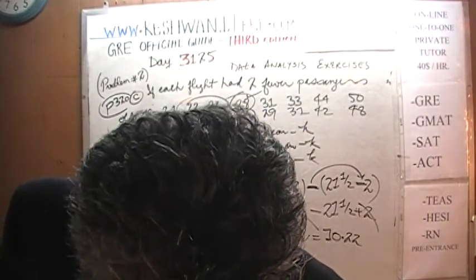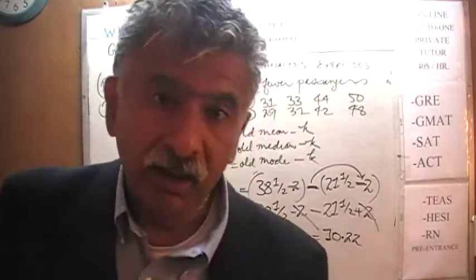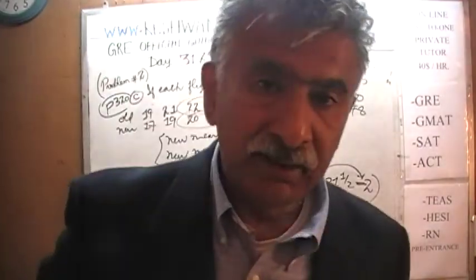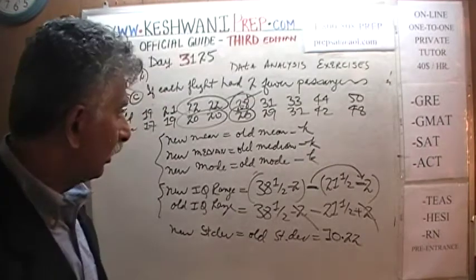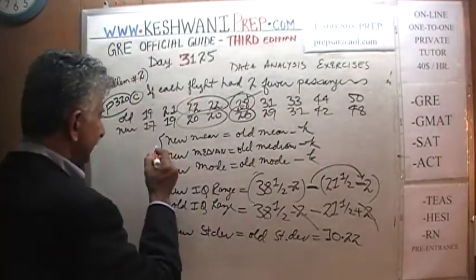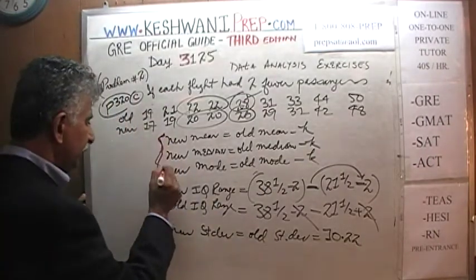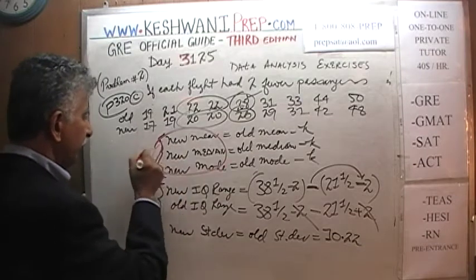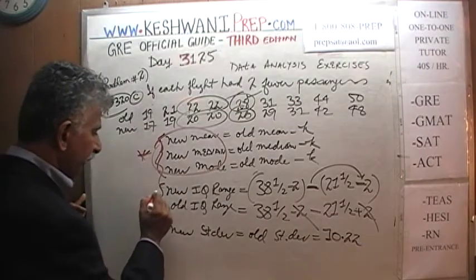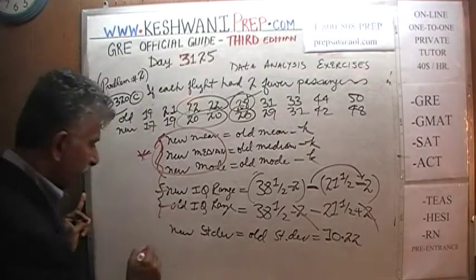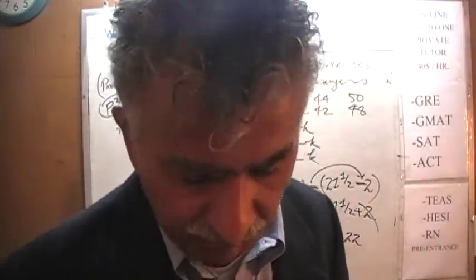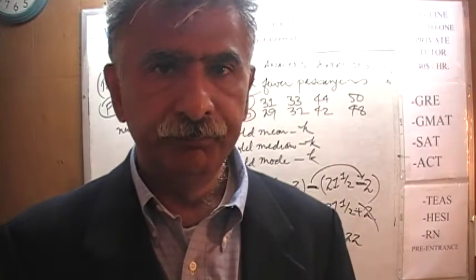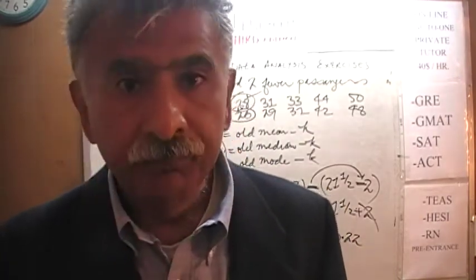That was the end of part C. To summarize: when adding or subtracting a constant, the mean, median, and mode are impacted — they go up or down by that amount. But the range, interquartile range, and standard deviation are not impacted. I'll see you tomorrow.